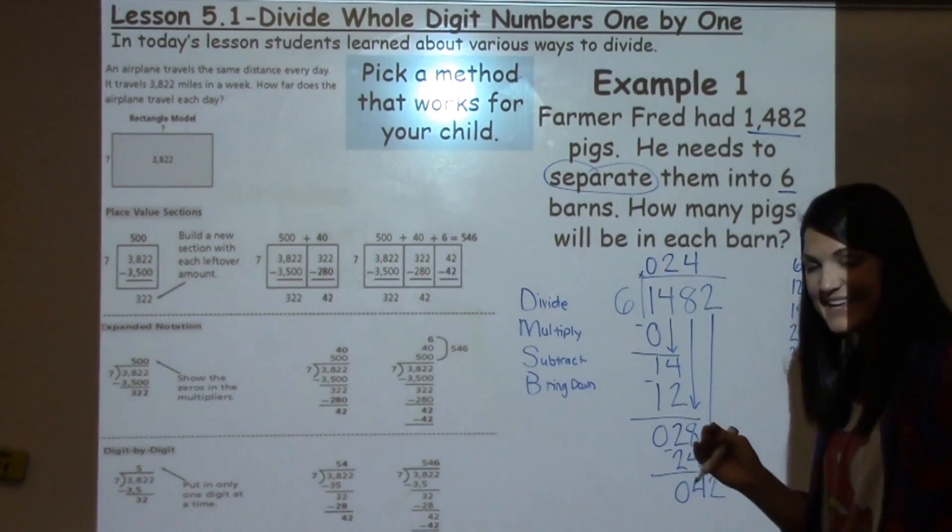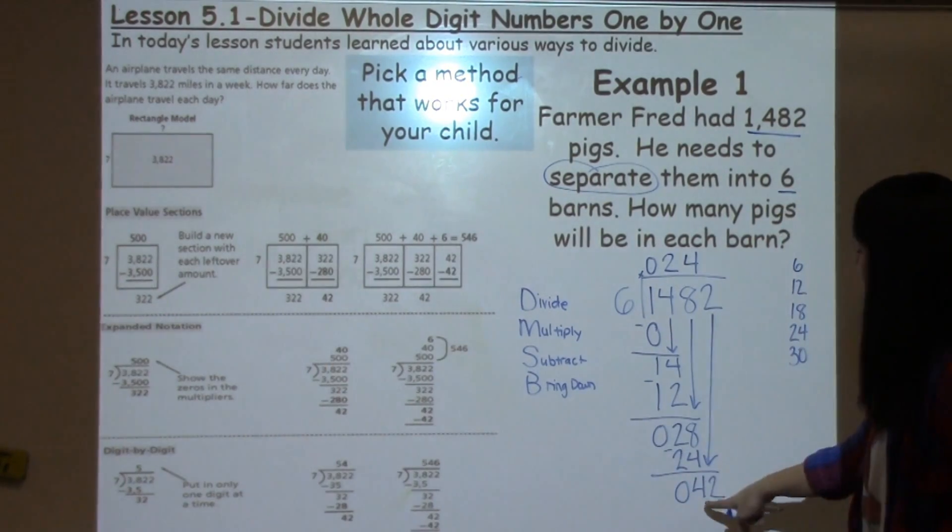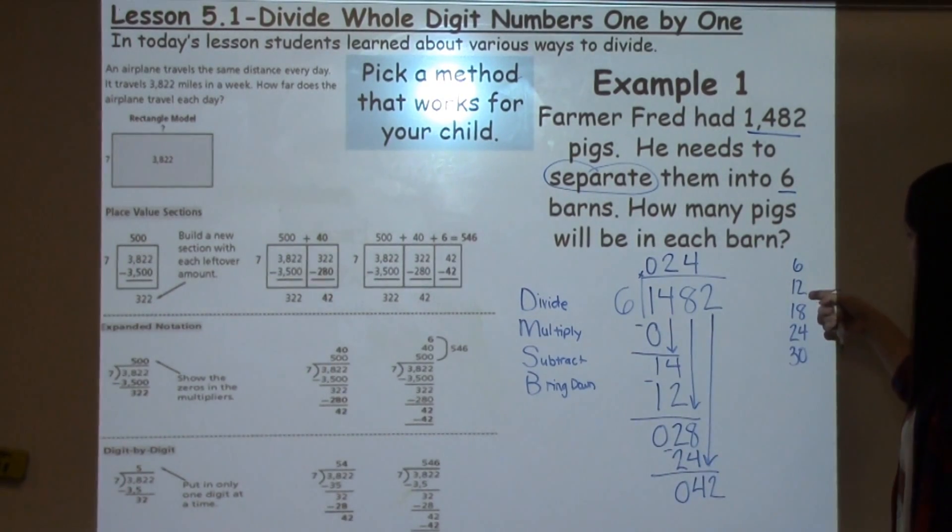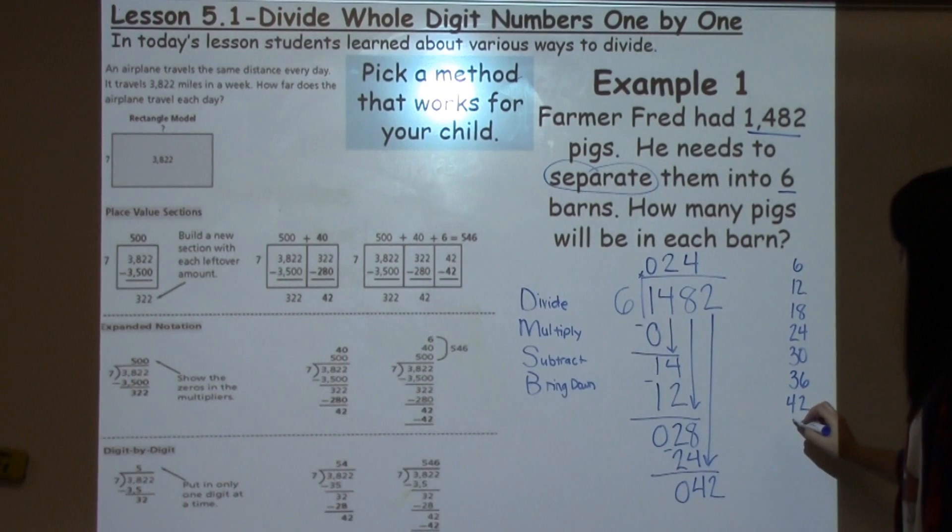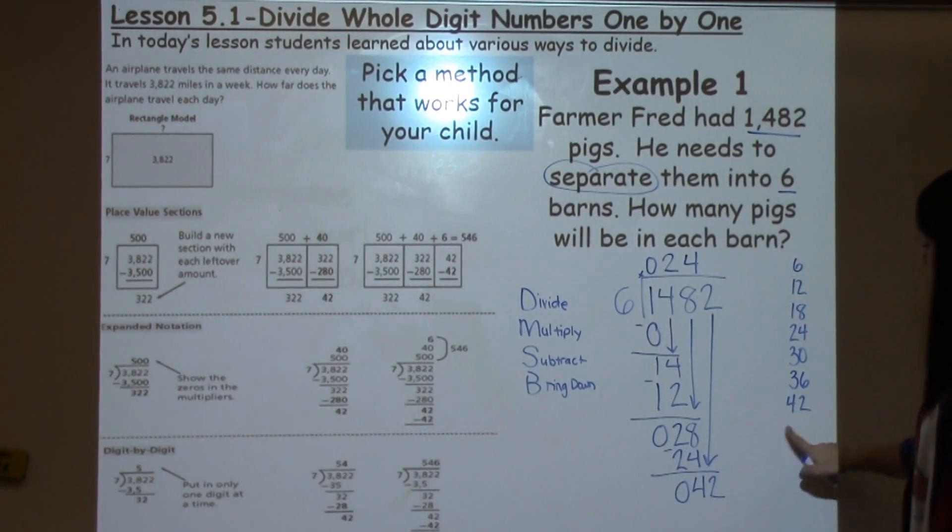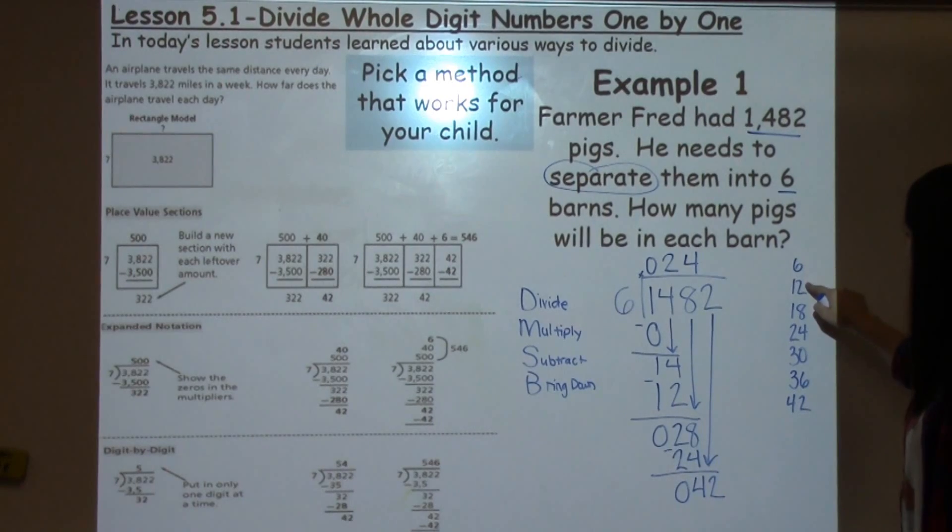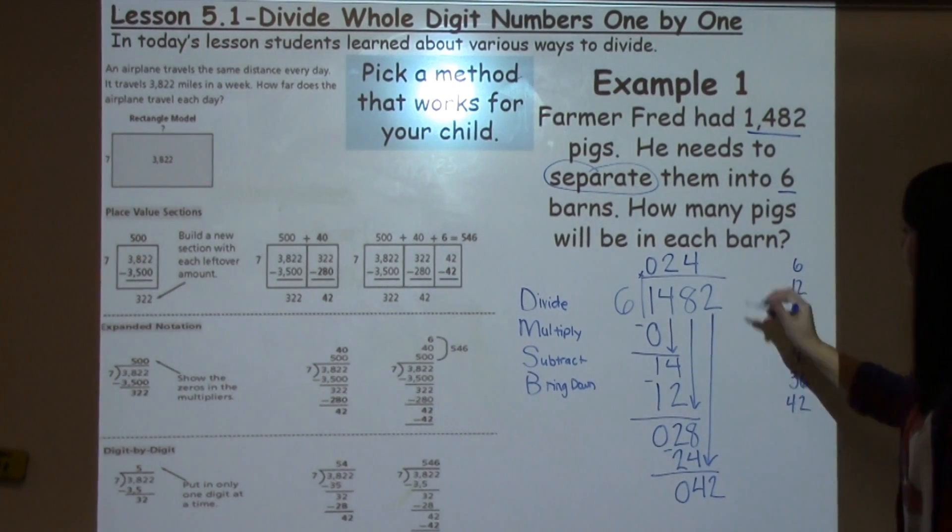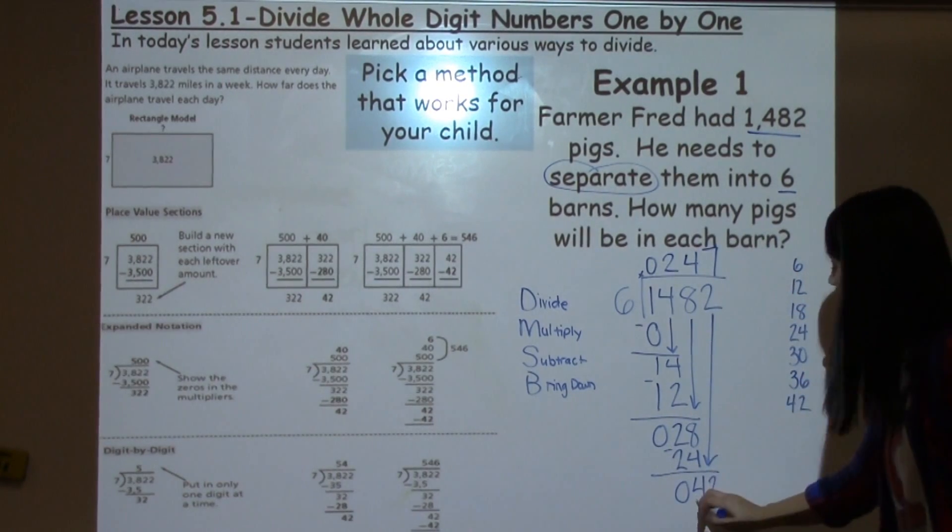So now I need to go back again and think, how many times can 6 go into 42? 6, 12, 18, 24, 30, 36, 42. And I see that 42 and 42 match up exactly. So that's going to work. 6 times 7 gives me 42.